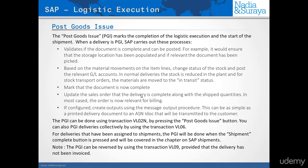The PGI can be done by using the transaction VL02 by pressing the post goods issue button. Another way of doing this is to use the collective transaction VL06, which has a collective button that says post goods issue. If you are using shipments, just note for now that the PGI can also be done via the shipment complete button, which I will cover in the shipment lectures later on.